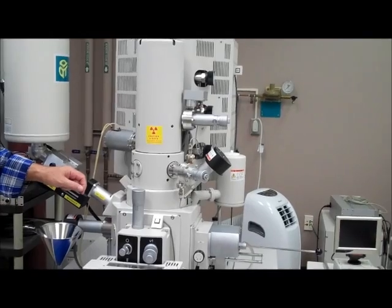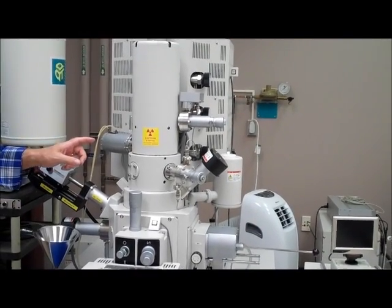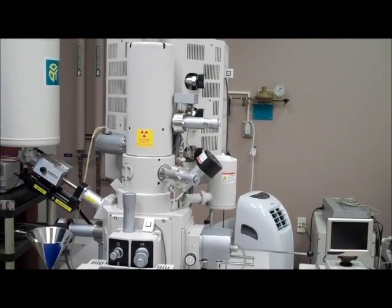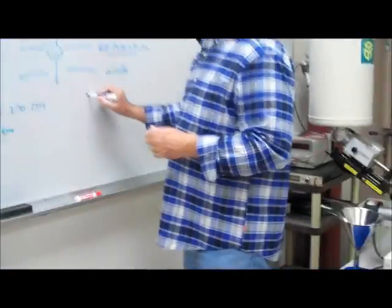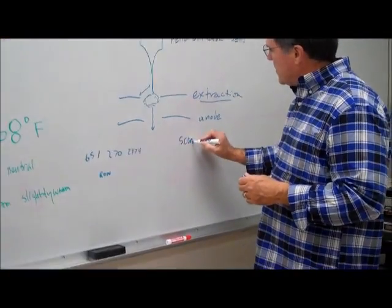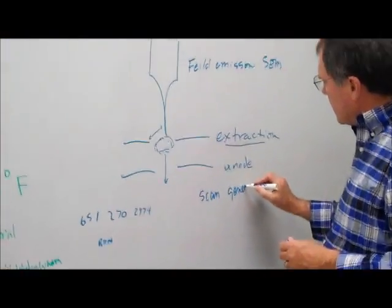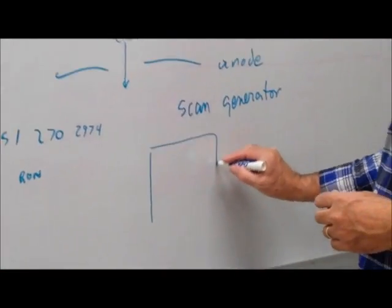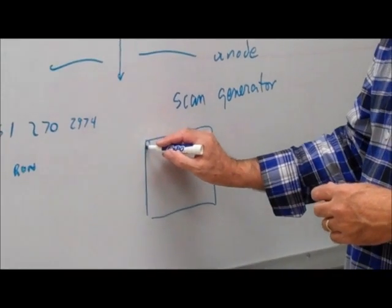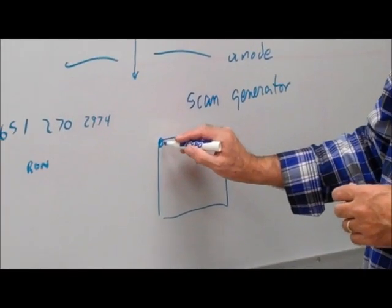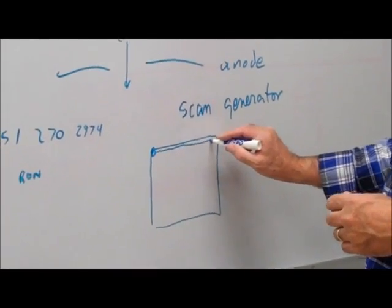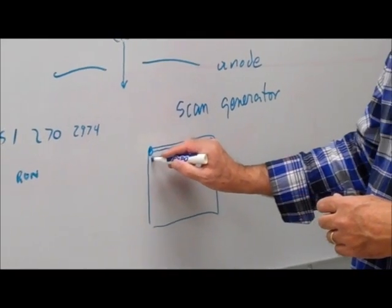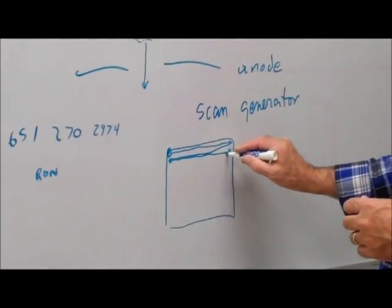And then the scanning part of it comes from a device called a scan generator. And if you look at the surface of the sample, the scan generator forces the electron beam across the sample, and then down one line, and then across the scan.